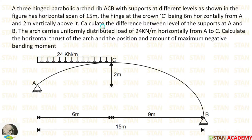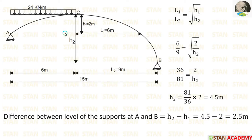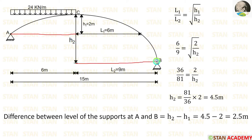In this arch, we have two rises and two lengths. For the left side, the length is 6 meters and the rise H1 is 2 meters. For the right side, the length is 9 meters, but the rise H2 is not given in the question, so we have to calculate it.